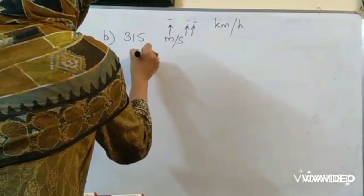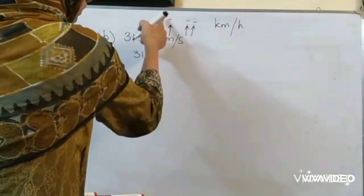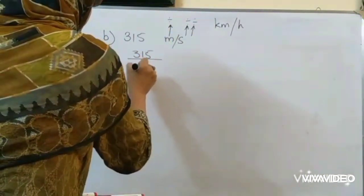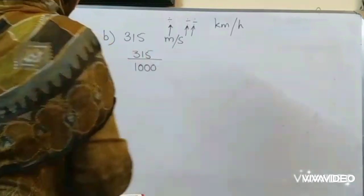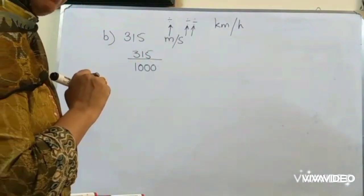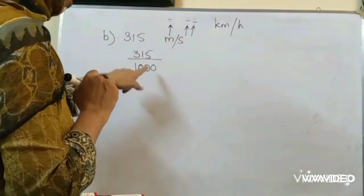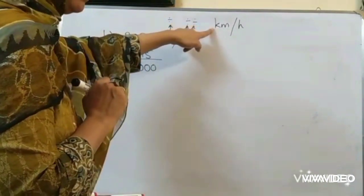Now how will we write it? 315. Division means the kilometers will be written like this. Divided by 1000. Because we have to convert meters into kilometers.